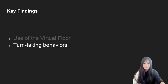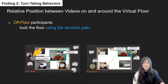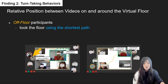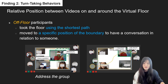The second set of findings is about utilizing malleable mirrors to enact turn-taking behaviors. First, users use relative position for turn-taking. Off-floor participants took the floor using the shortest path to the virtual floor. This shows a turn-taking pattern where audiences reversely adjust the whole presenter group via the boundary of the virtual floor. In contrast, two participants moved to the boundary in close relation to someone to address that person, showing the difference between adjusting the group and adjusting the individual.